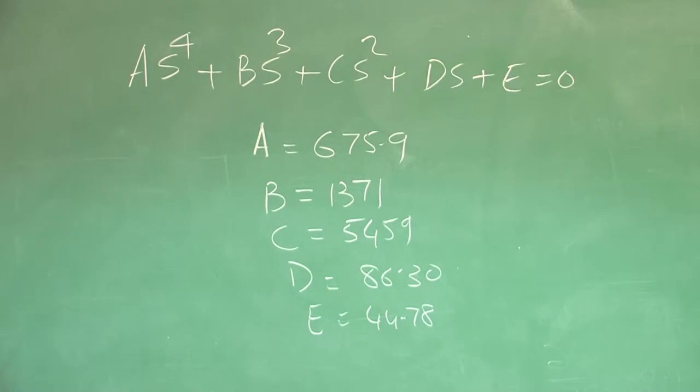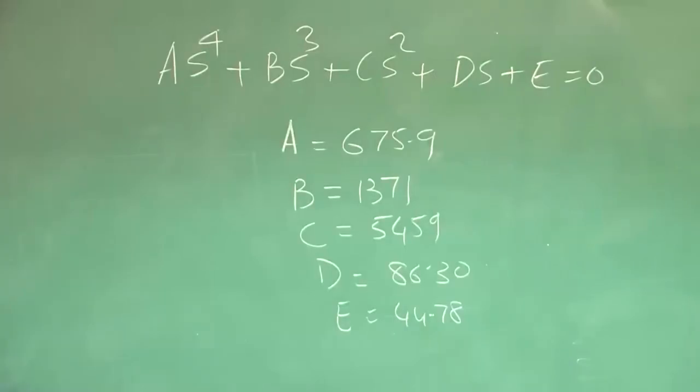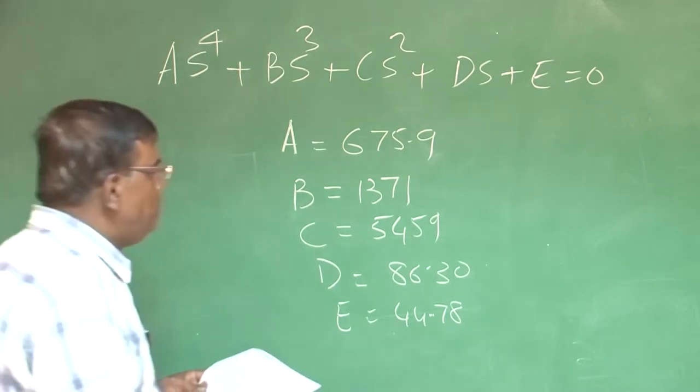You can immediately check applying Routh criteria, both the conditions are satisfied. One is that all the coefficients are greater than 0, then the condition of D into BC minus AD minus B² E greater than 0. You can check both these conditions are satisfied.